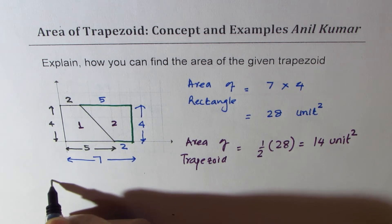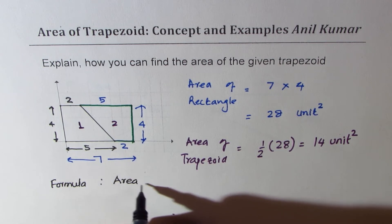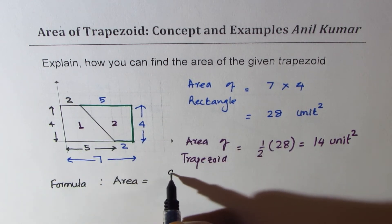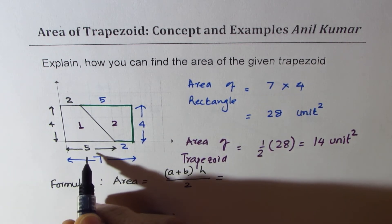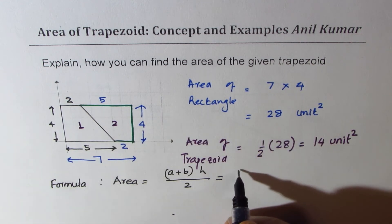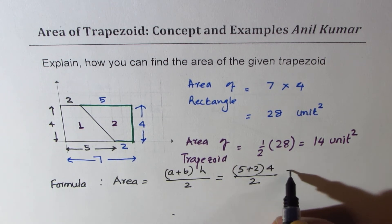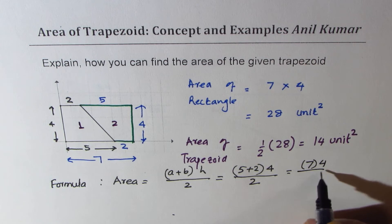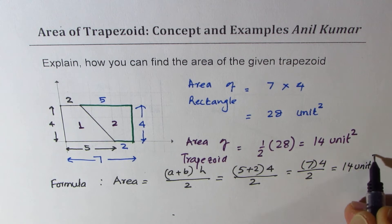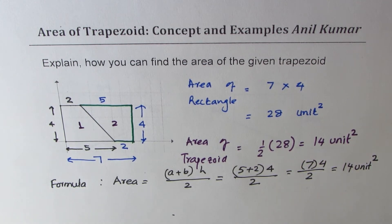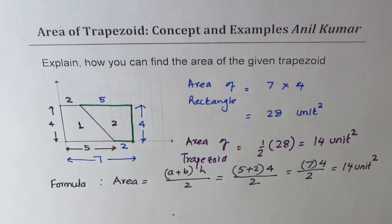Now let's find it directly using the formula. The formula for area is: area equals sum of the parallel sides, which is A plus B, times height, divided by two. Sum of the parallel sides means five plus two, times height of four, divided by two. That is seven times four divided by two, which also gives us 14 square units. So that shows that our formula is perfect and can be utilized in different scenarios.